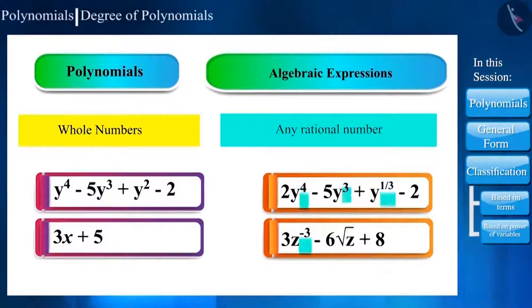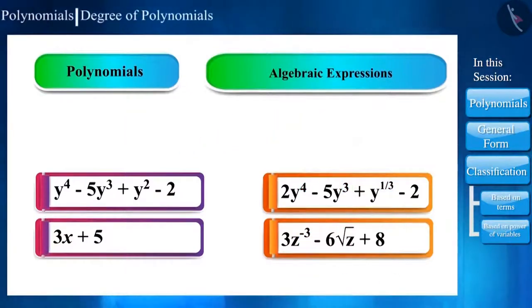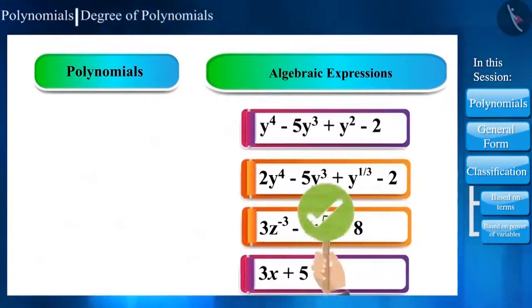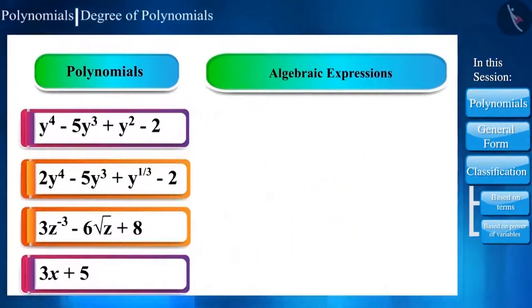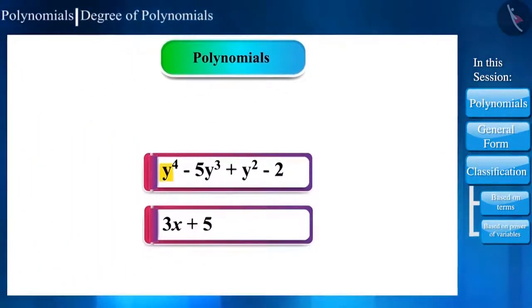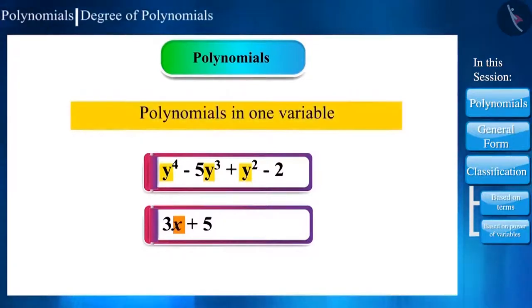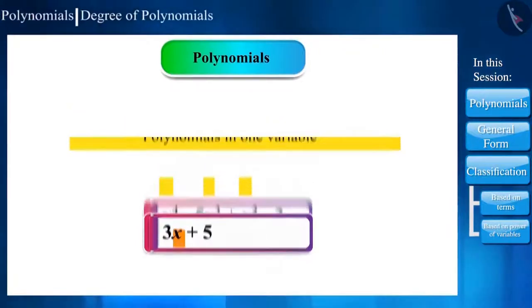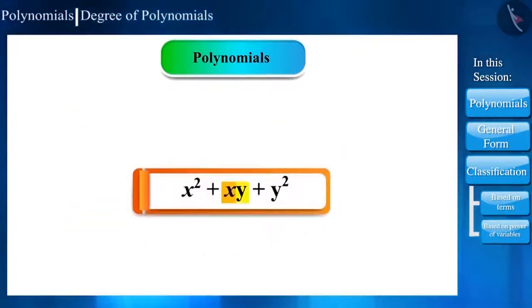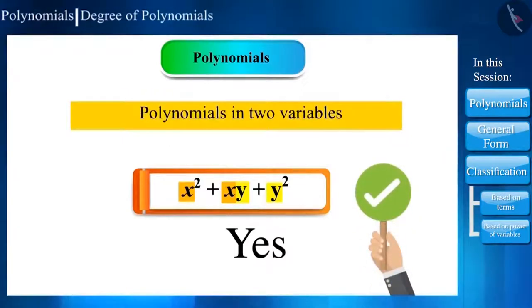Here, we have to focus on one thing. That all polynomials are expressions. But not all expressions are polynomials. Friends, in the given examples, polynomials are in one variable only. And such type of polynomials are called polynomials in one variable. Can a polynomial be in the form of two or more variables? Yes, but we will learn those polynomials in higher classes.